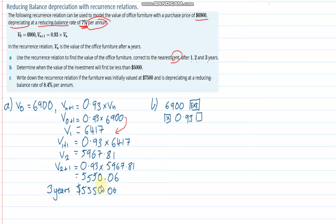Remember the key parts: have V0 stated, and your R value should be under 1 — otherwise you know you're wrong because it would go up in value, not down. And it's always multiplied by Vn, using the previous value to build the recurrence relation.